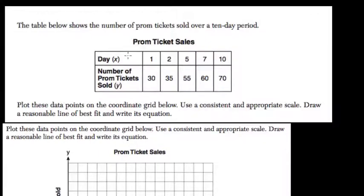We're told in this table that the number of prom tickets sold over a 10-day period is represented here, where x is the days and y is the prom tickets. Plot these data points on the coordinate grid below. Use a consistent and appropriate scale. Draw a reasonable line of best fit and write its equation.